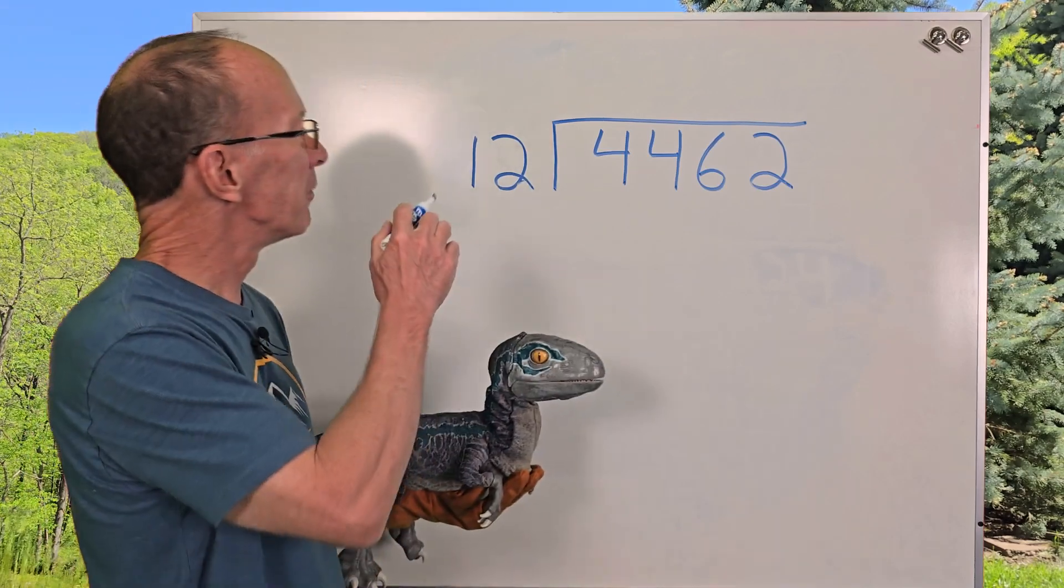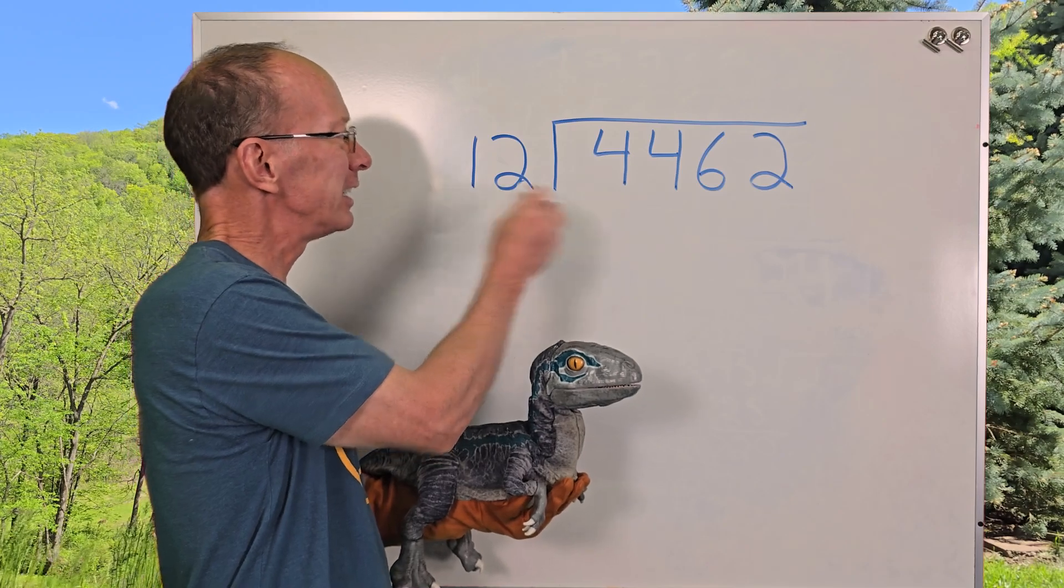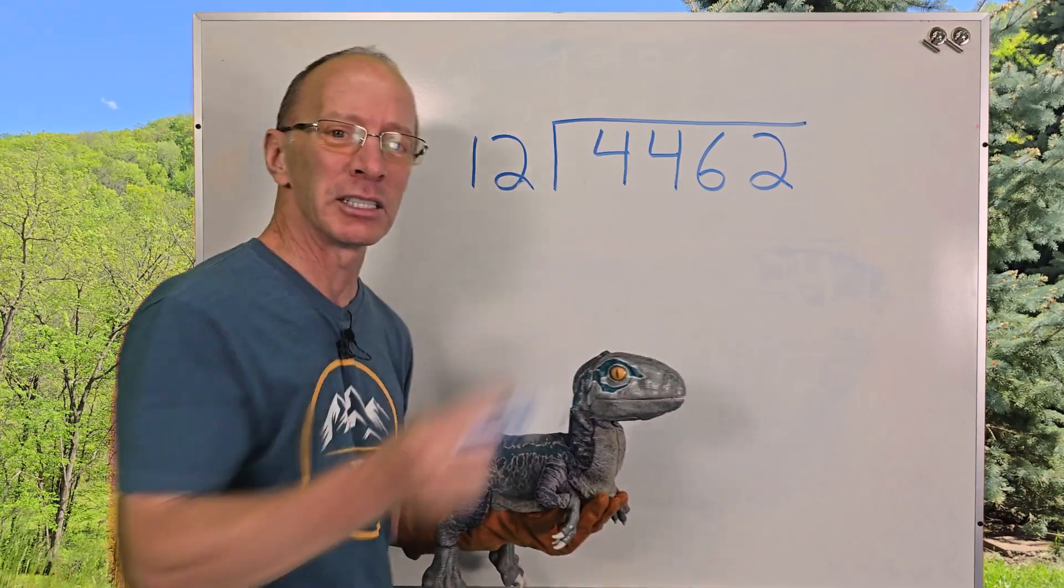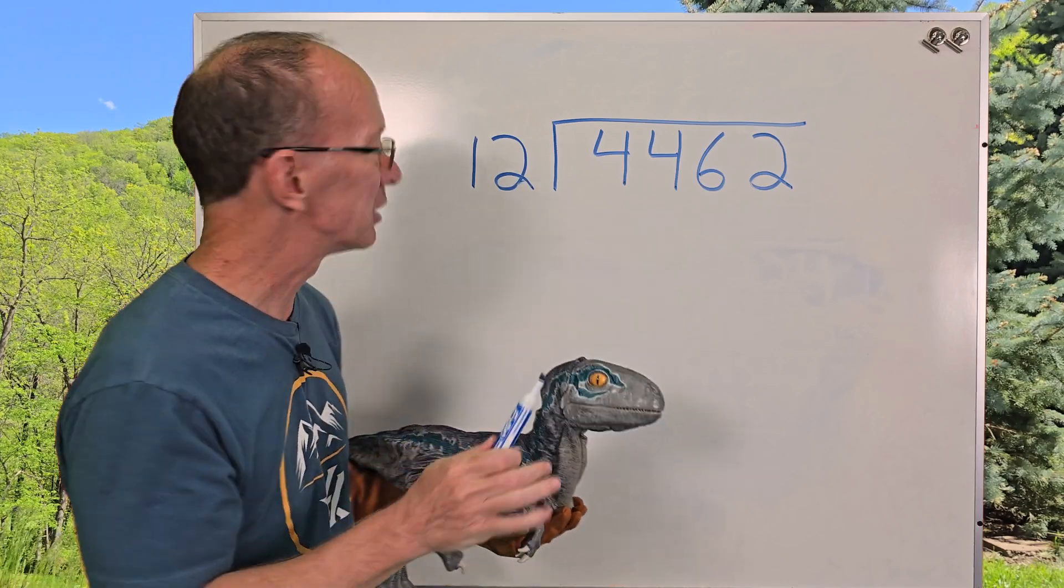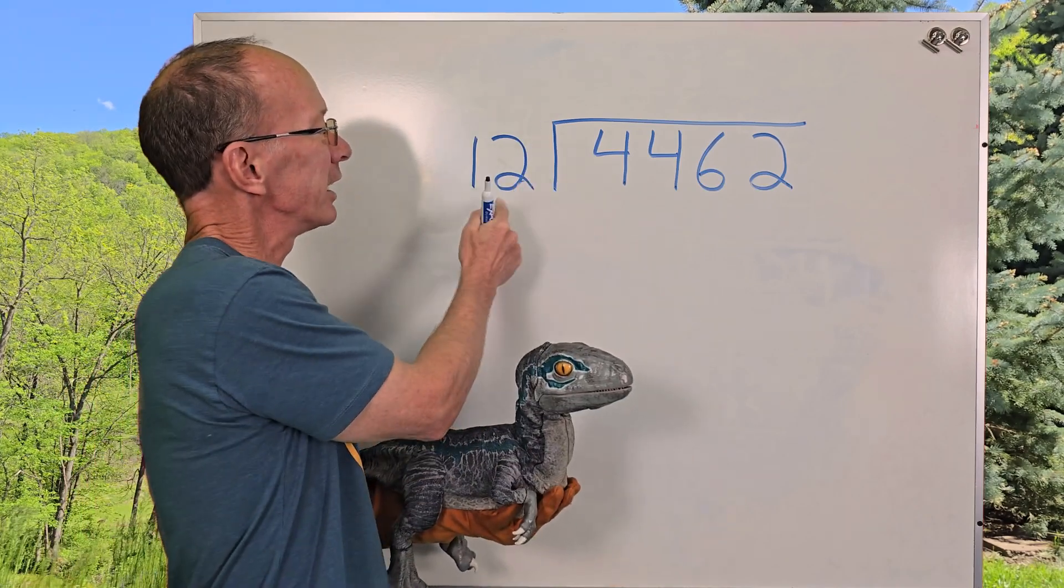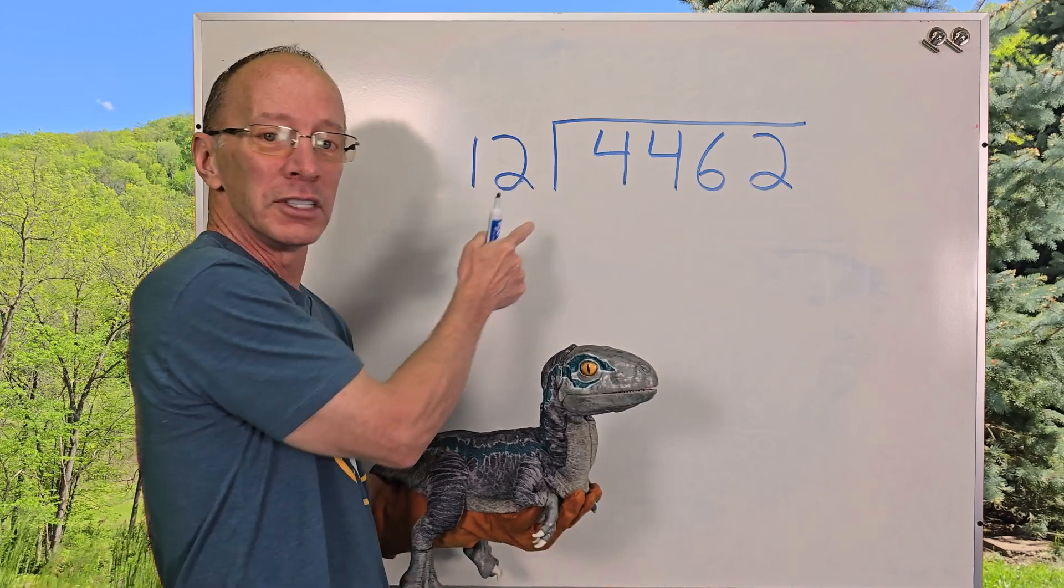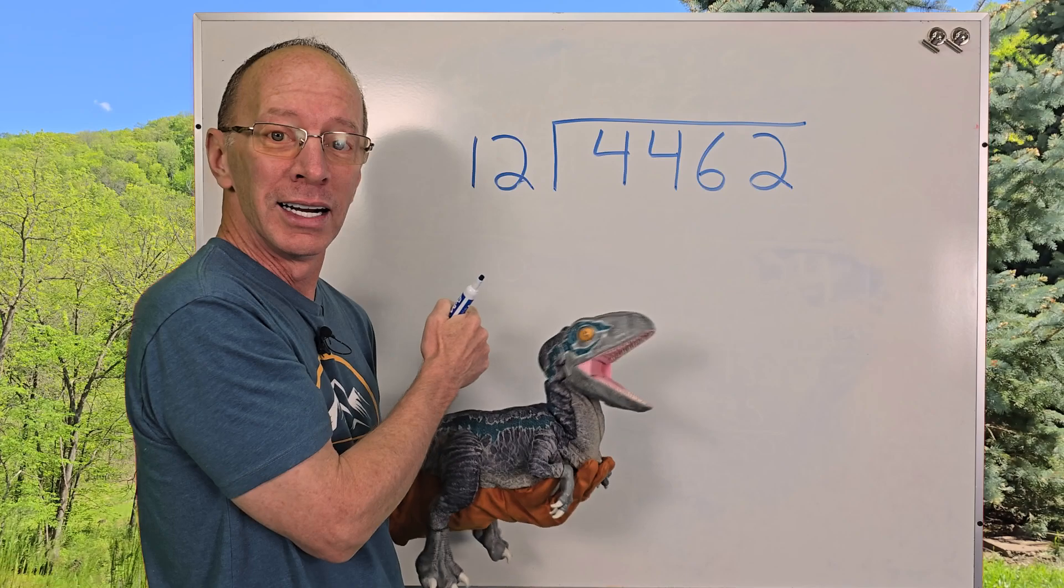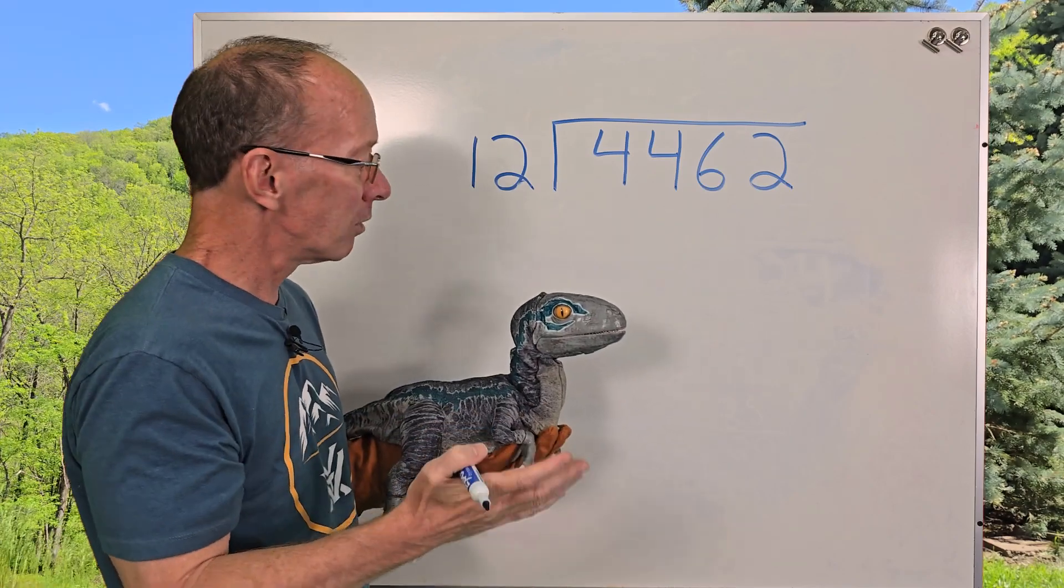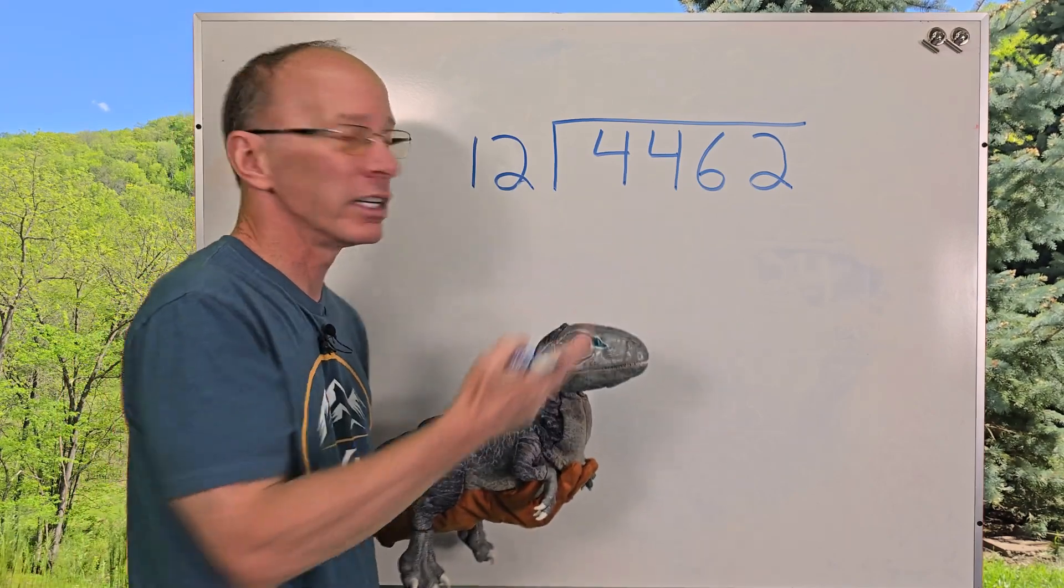So first of all, I need to take 12 and figure out how many times I can put it into this big number right there. We're going to just take it easy, cheesy, lemon squeezy. So, can I put 12 into 4? You can't do it, can you? Can I put 12 into 44? You can. Well, how many times can I put 12 into 44?